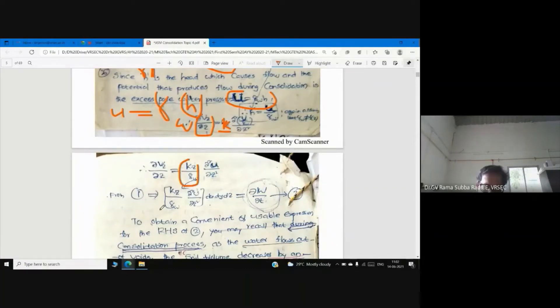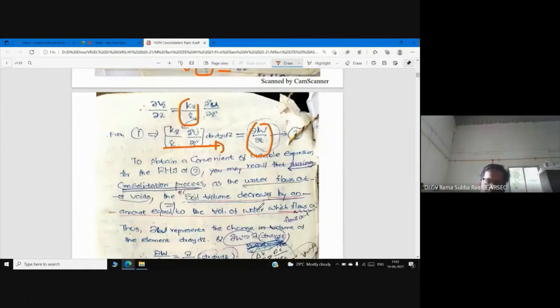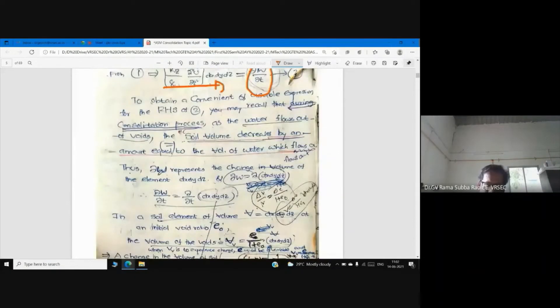Ultimately you can see the amount of water entering into the soil element is equal to the amount of water coming out, ∂w/∂t. You may recall that during consolidation process, water flows out of voids. The soil volume decreases by an amount equal to volume of water which flows out. So the change in volume of soil is due to change in volume of voids, not due to solids. Volume of solids remains constant.